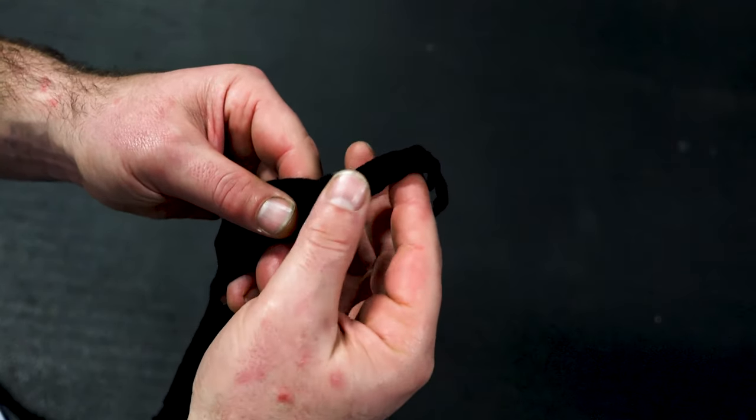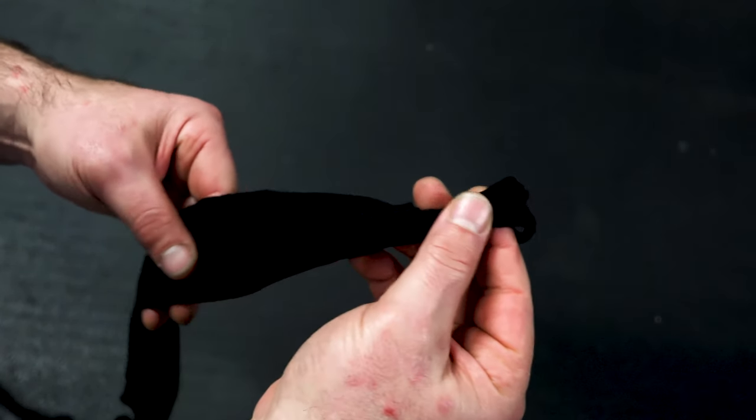Hi guys, in this video we're going to show you how we wrap our hands here at Total Boxer using three and a half meter cotton wraps.